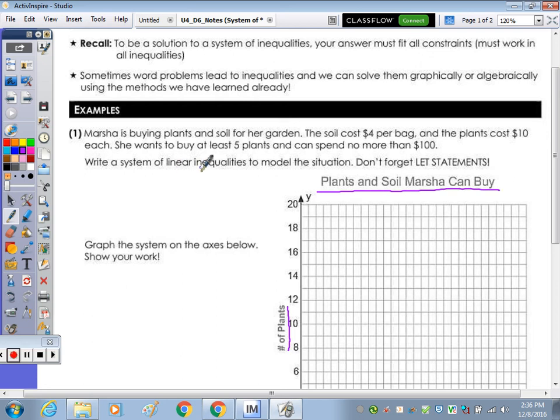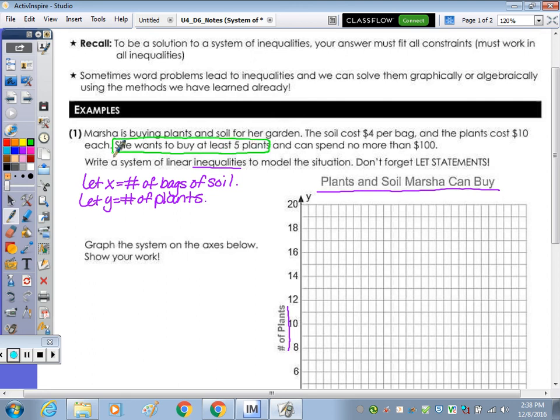She wants to buy at least five plants and can spend no more than a hundred. So we're going to write a system of linear inequalities. Our first inequality comes from the statement, she wants to buy at least five plants. The plants is the y. So the y has to be at least, so that means the y can be equal to 5 or greater than.